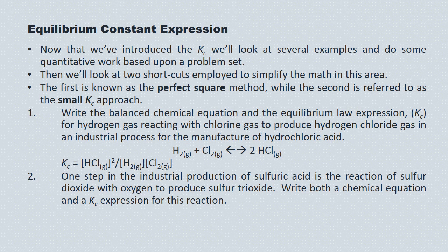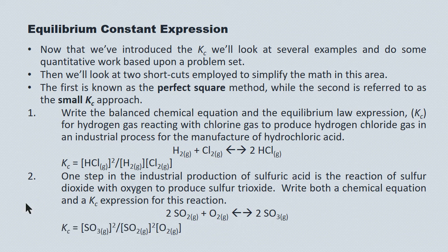Question two: one step in the industrial production of sulfuric acid is the reaction of sulfur dioxide with oxygen to produce sulfur trioxide. Two moles of SO2 reacting with one mole of O2 is in equilibrium with two moles of SO3. The Kc expression is the concentration of SO3 squared divided by the concentration of SO2 squared times the concentration of O2.